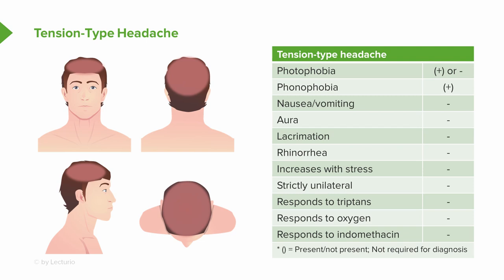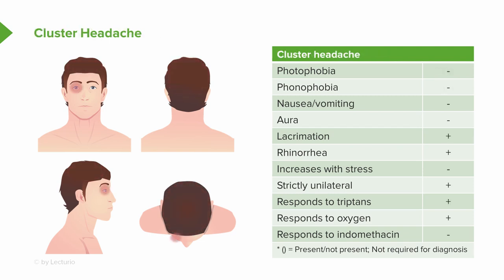Cluster headache differs from migraine variants. We don't typically see photophobia, phonophobia, nausea, vomiting, and aura in cluster. But it is a paroxysmal headache with prominent autonomic features — patients have lacrimation, rhinorrhea, and conjunctival injection, usually locked to the same side as this strictly unilateral headache, which is often positioned behind the eye, as you can see in the schema. Cluster can respond to triptans as well as oxygen, but not indomethacin.